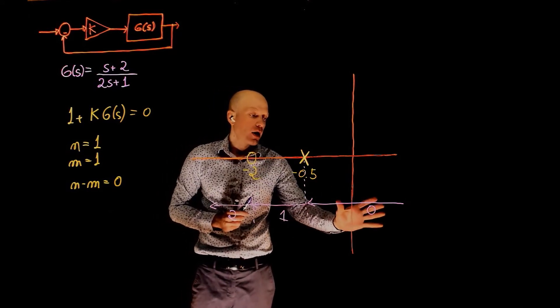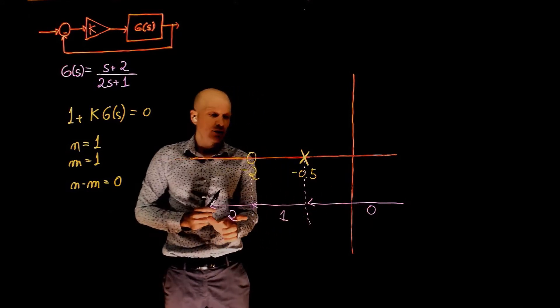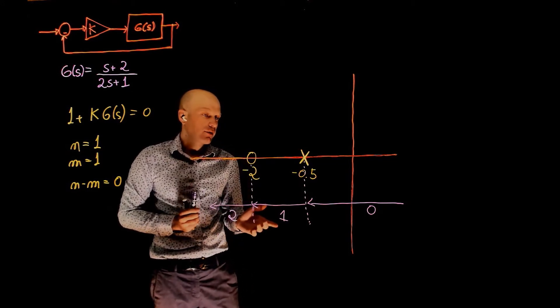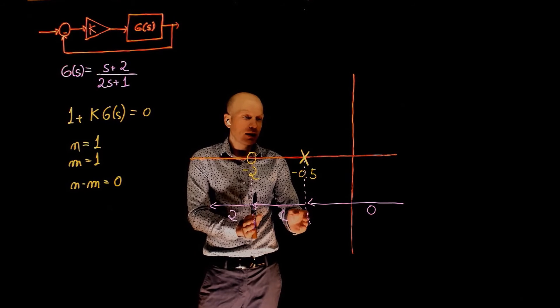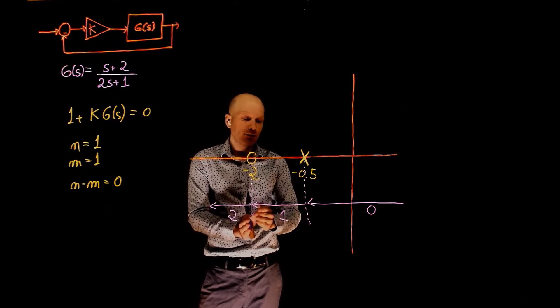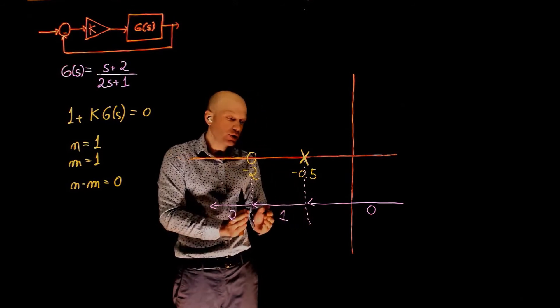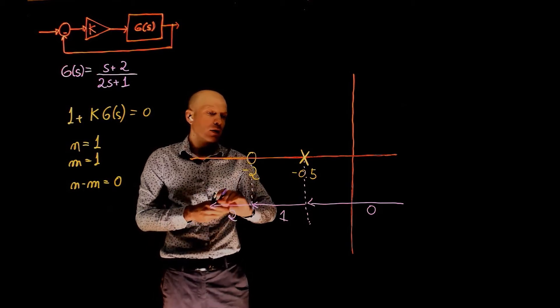We know that the root locus exists to the left of an odd number of poles and zeros. So here we have an even number, here we have an even number, we cannot have a root locus. The root locus only exists to the left of an odd number of poles and zeros. The region that corresponds to that criterion is this one here.